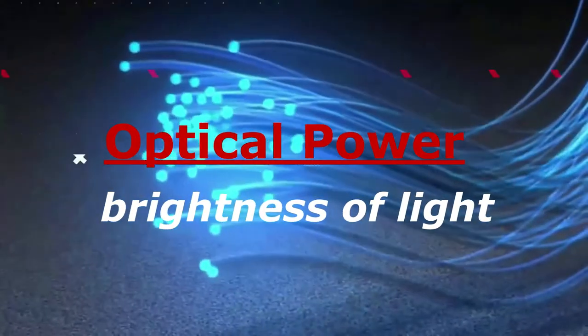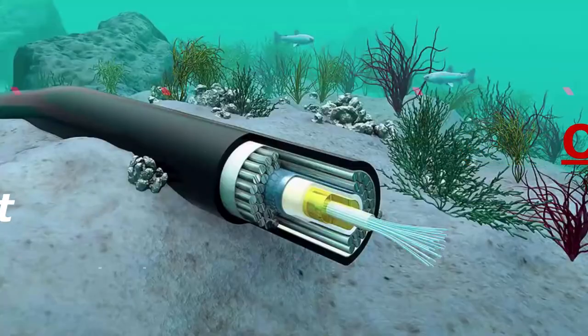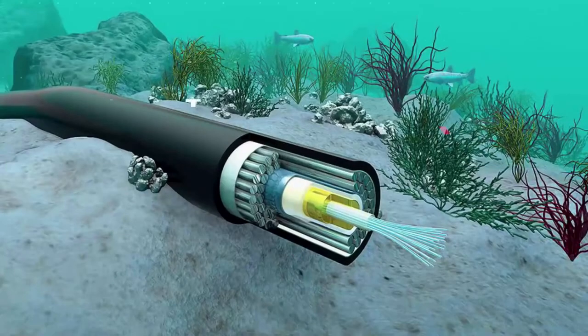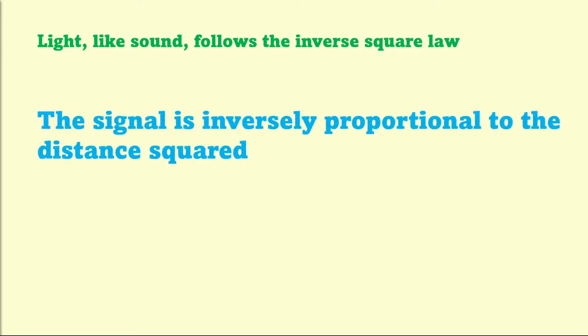Quite simply, the brightness, or intensity, of light. As light travels through fiber, some energy is lost. Light, like sound, follows the inverse square law.